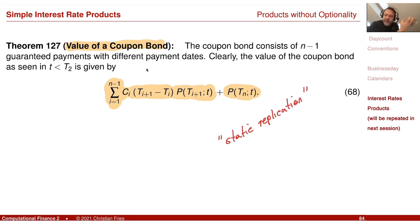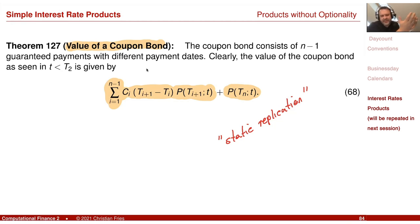What I have done here is a static replication. I have observed that there is a portfolio of financial products — namely the zero coupon bonds — which I can choose and do not need to change (therefore 'static'), and which has the same value ('replication'). So I can value the coupon bond.